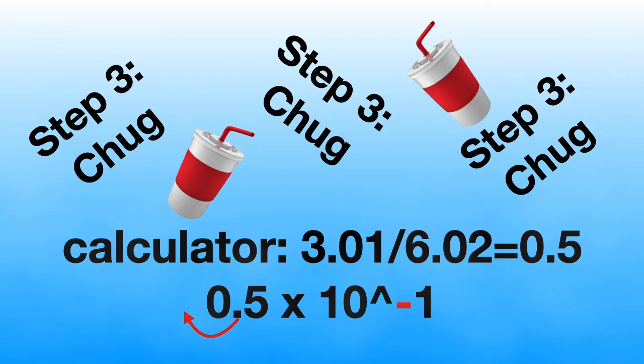To divide exponents with the same base, you can subtract them. So we have 10 to the 22nd power in our numerator and 10 to the 23rd in our denominator, giving us 22 minus 23 equals negative 1. The negative tells us to move the decimal to the left. We have a power of negative 1, which means we are going to move the decimal to the left one time.